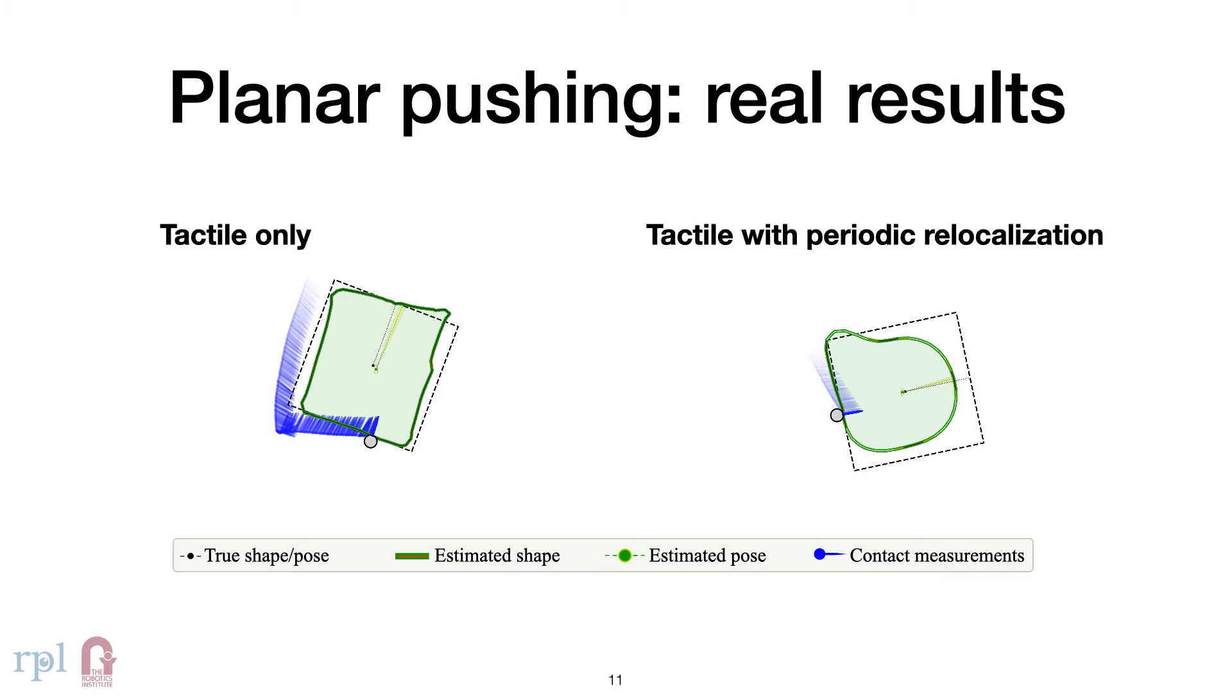We conduct a second experiment where we periodically add global pose estimates to correct for drift. This can be seen as a proxy for visual tracking for a difficult multimodal task. We see better shape estimates in this case.